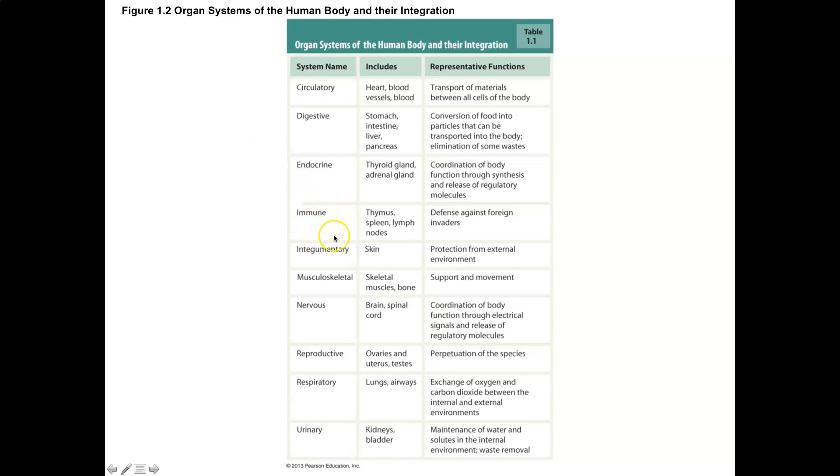Immune system, integumentary system, musculoskeletal, nervous, reproductive, respiratory, urinary. So always take the opportunity to go back and review anatomical features and structures as you're preparing to study physiological things.